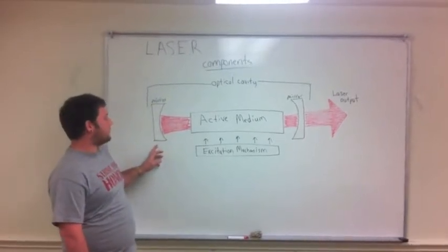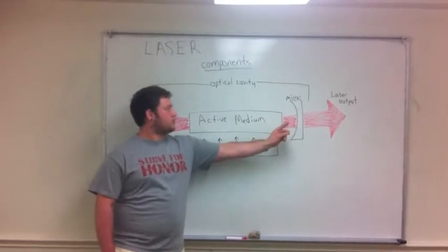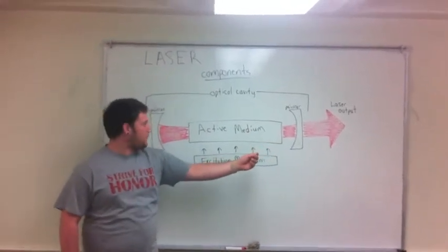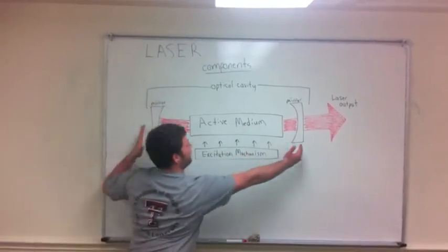This one's a highly reflective mirror, so everything's reflected by this. This is a partially reflective mirror that allows everything in the laser to be outputted, or not everything, but parts of it. This is the optical cavity, this whole thing.